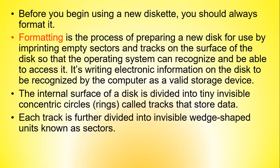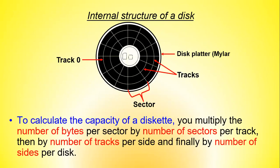Before using a new diskette you were always supposed to format it first. Formatting is the process of preparing a new disk for use by imprinting empty sectors and tracks on the surface of the disk so that the operating system can recognize and access it. The internal surface of a disk is divided into tiny invisible concentric circles called tracks, and each track is further divided into invisible wedge-shaped units known as sectors. This structure is similar to that of other storage media such as hard disks and optical disks.